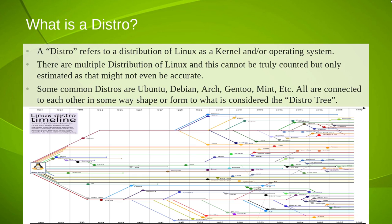So what is a distribution — or distro? It's the Linux kernel, and/or GNU, or any other type of operating system, because not all operating systems are GNU, but most are. There are many different distros out there, such as Ubuntu, or the base of what Ubuntu is based off of, which is Debian. There's also Arch, Gentoo, and Mint, which is built off Ubuntu — and I run that. All are connected to each other in some way.